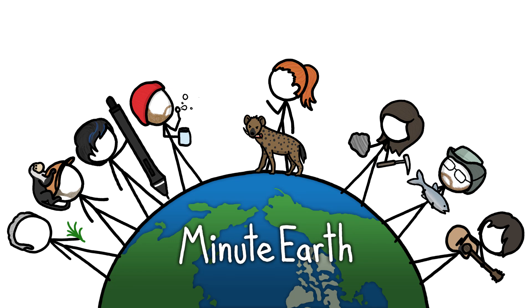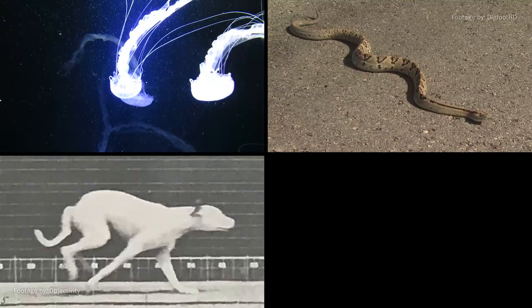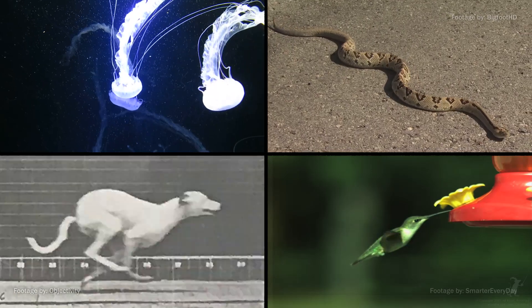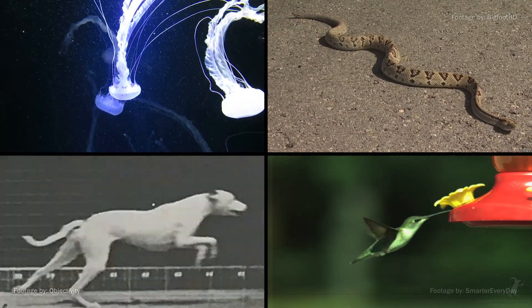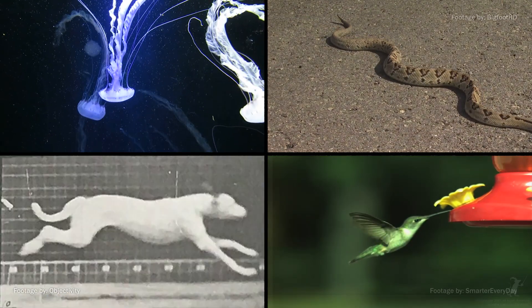Hi, this is Kate from MinuteEarth. Animals move in all kinds of ways. But one thing all that motion has in common is rhythm. So it's not really that surprising that the simple neural circuits driving these motions are basically little rhythm machines with electrical patterns that give rise to coordinated motion.